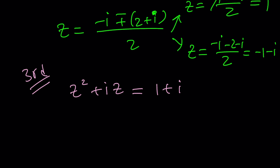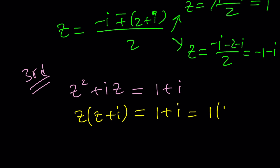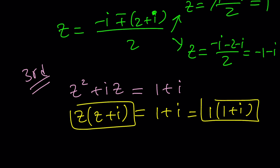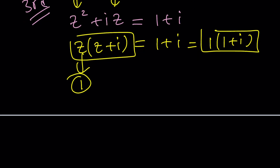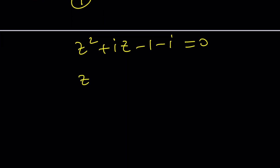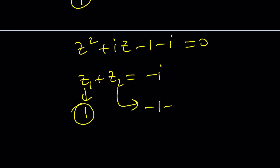The third method is awesome — caution, it doesn't apply to all problems, but here it does. I multiply z squared by i times z and get 1 plus i. Can I write 1 plus i as 1 times (1 plus i)? Comparing both sides, z equals 1 works — you can verify: 1 plus i equals 1 plus i. For the other solution, use Vieta's formulas: the sum of the roots equals negative b over a, which is negative i. Since one root is 1, the other root z2 is negative 1 minus i.